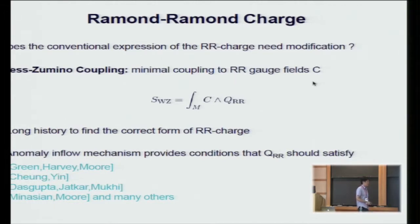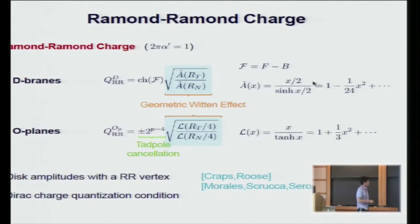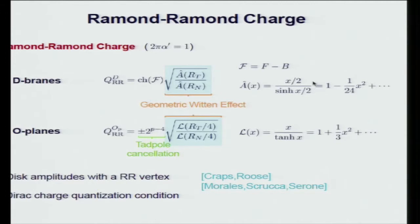The anomaly inflow mechanism has been very useful in highly constraining the possible form of this Ramond-Ramond charge. People have studied this anomaly inflow in many different settings, such as D-branes on top of each other, intersecting D-branes, and so on, studied by these people and many others. The D-brane charge inferred from anomaly inflow is given by the Chern character of the worldvolume field strength and NSNS B-field gauge field, together with a square root of the A-roof genus of the tangent bundle over the A-roof genus of the normal bundle.